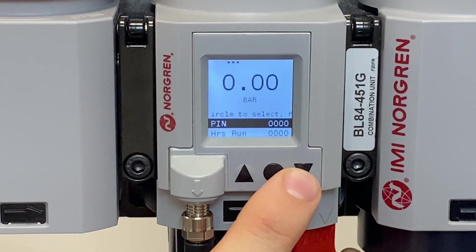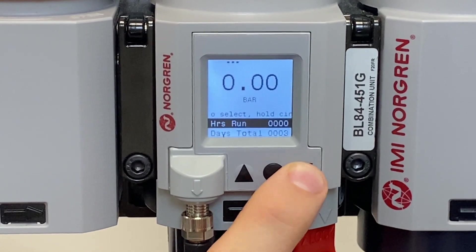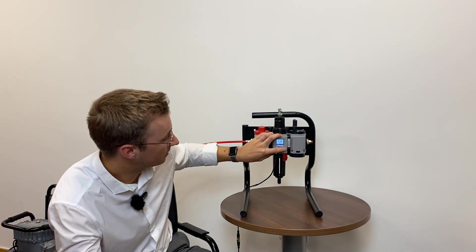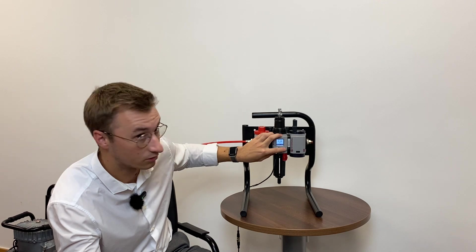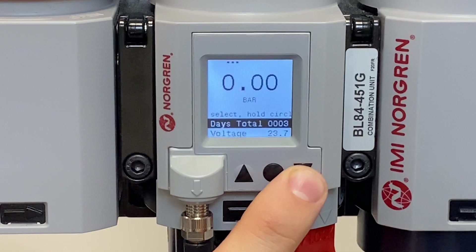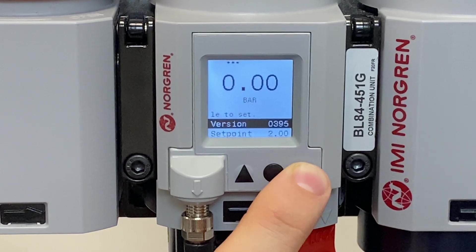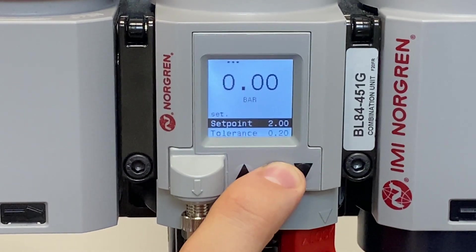This here is where you can change your PIN. Then we've got the hours run, so this is going to be displaying how many hours the system has been online since being reset or unplugged. The total days it's been on for, the voltage running through the system, the temperature, and then the software version. Then that takes you back to the set point.